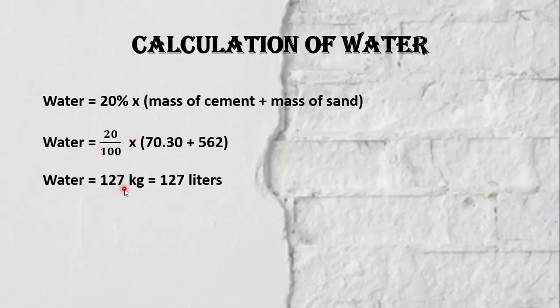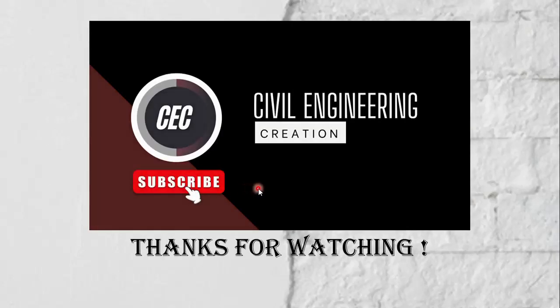The amount of water becomes 127 kilograms, and in liters, 127 liters of water is required for our plaster. This is today's lecture. Thanks for watching.